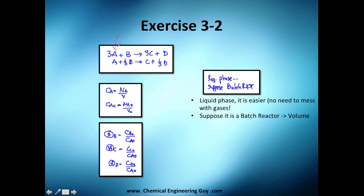Since they are asking us to do it in terms of caustic soda or sodium hydroxide, we need to get rid of these threes. So let's divide everything by three. We get 1, 1/3, 1, 1/3.